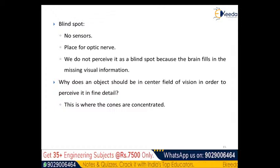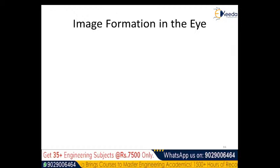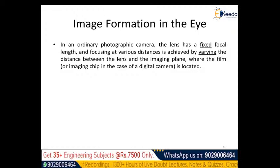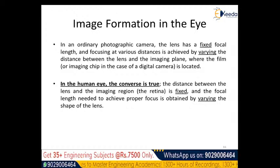In an ordinary photographic camera, the lens has a fixed focal length and focusing is achieved by varying the lens-to-film distance. The human eye works by an opposite mechanism: the distance between the lens and the retina is fixed at approximately 17 millimeters, and focusing is achieved by varying the shape of the lens itself.